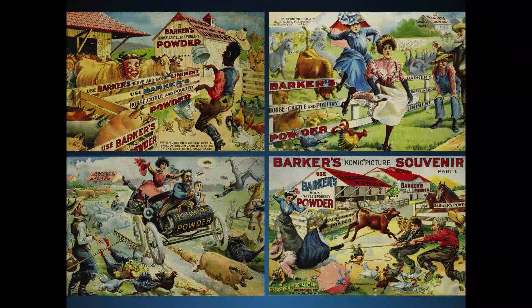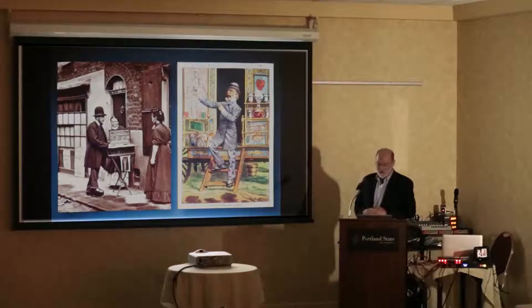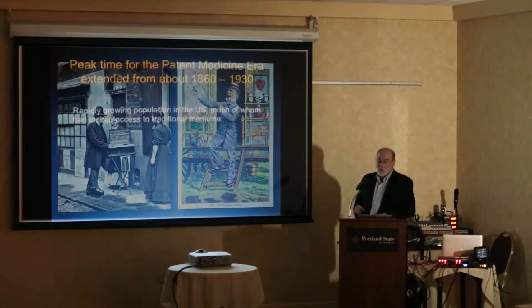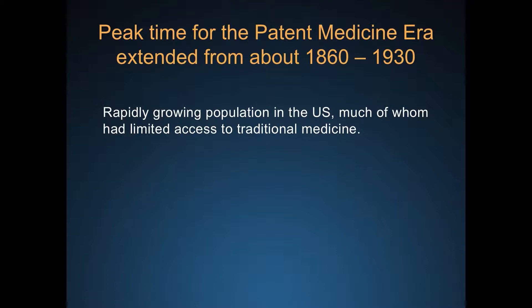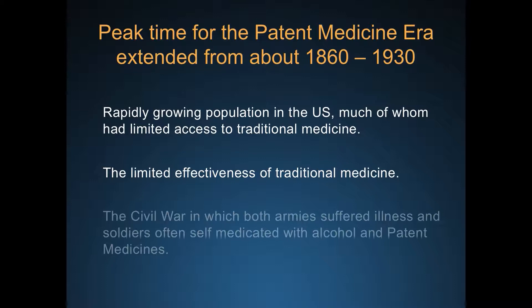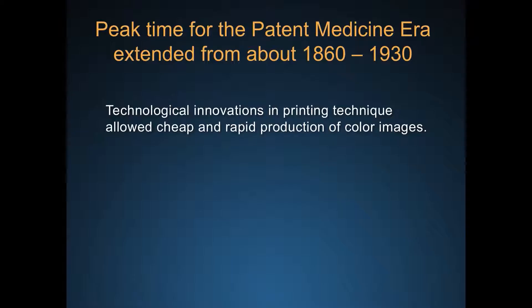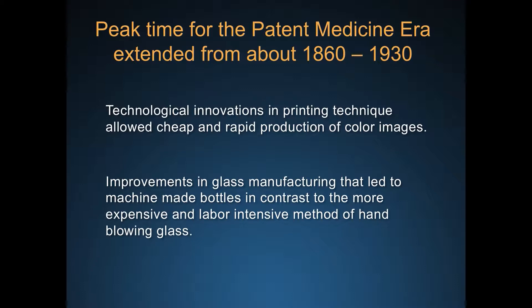A key thing about patent medicine is that it was generally sold by itinerant persons who would move from town to town and probably wouldn't be there to take any responsibility for their wares. The peak time for patent medicine in this country was roughly 1860 to 1930, for several reasons: a growing population, limited effectiveness of traditional medicines, and the Civil War brought on a lot of self-medication through alcohol and opium. Technological innovations in printing allowed cheap, rapid reproduction of color images, and advances in glass bottle manufacturing — moving from hand-blown glass to mass-produced bottles — enabled mass production of patent medicines.